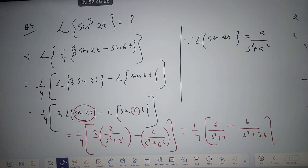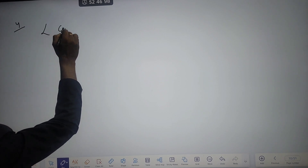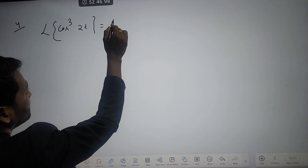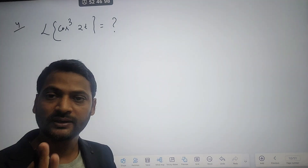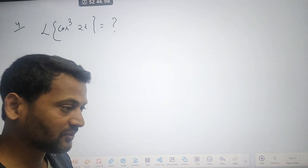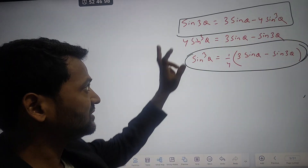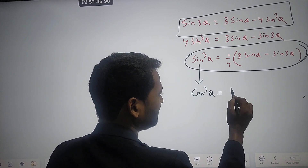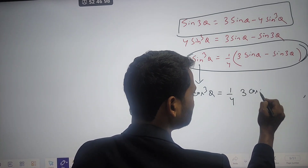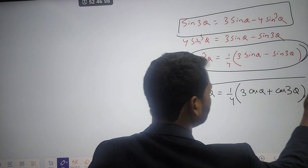That is all about the Laplace transformation of trigonometric cube functions like sin³(2t), sin³(5t), sin³(7t), and so on. Now coming to question number 4: find the Laplace transformation of cos³(2t). It is a trigonometric cube function. There is no direct formula, so we need to convert cos³θ to normal form. Just as we derived the sin cube formula from sin(3θ), similarly cos³θ = (1/4)[3cosθ + cos(3θ)].